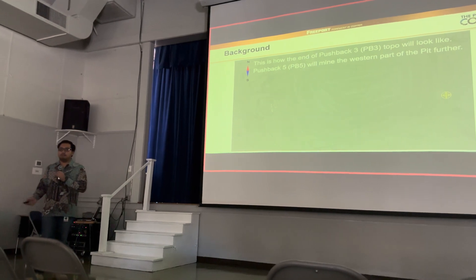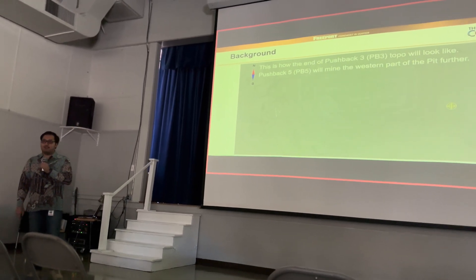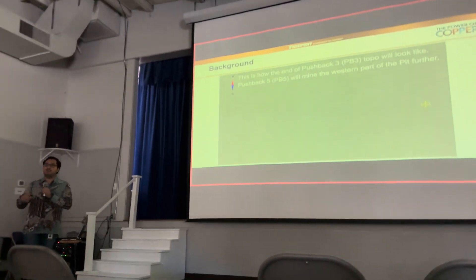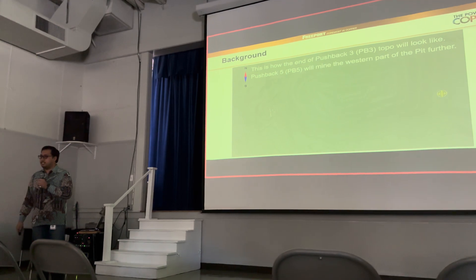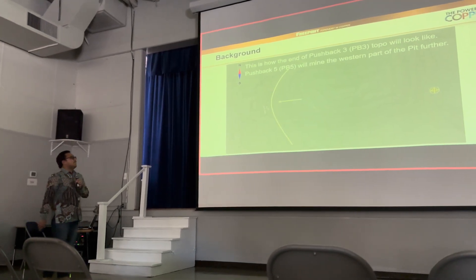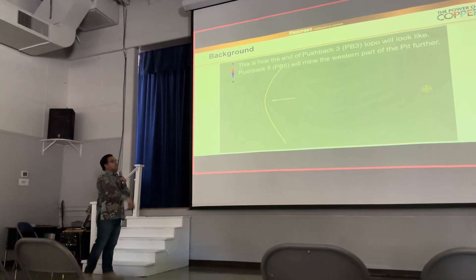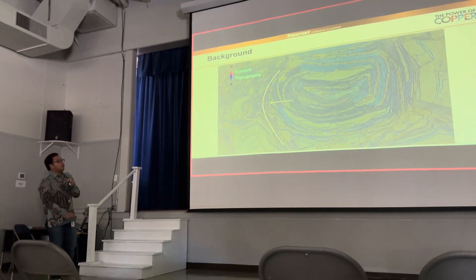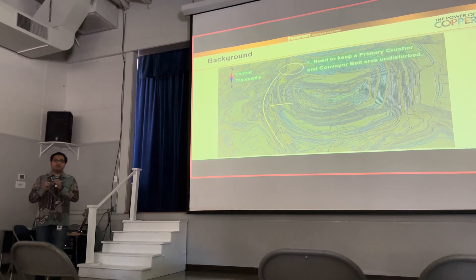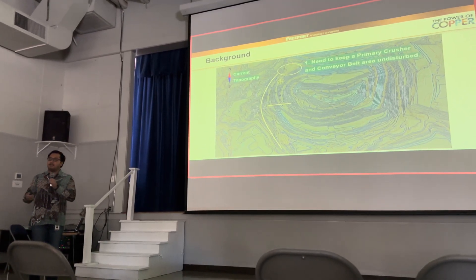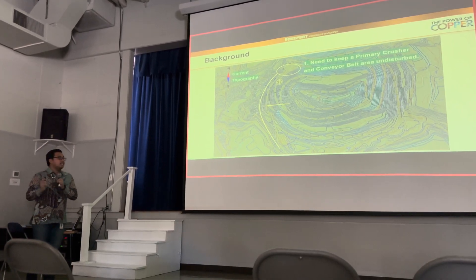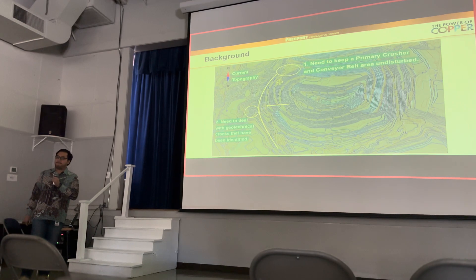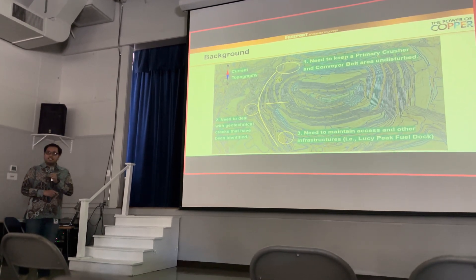We are planning to mine Pushback 5 in 2028. That's a long way to go, but why this project? Because we want to be able to overcome any potential issues that might disrupt our operation. The western part of the pit will look something like this line. Looking at the topography, we can identify several potential concerns. First, we need to keep our primary pressure and compressor area undisturbed. Second, the Geotechnical department has identified some cracks we need to deal with. Third, we need to maintain access and other infrastructures.